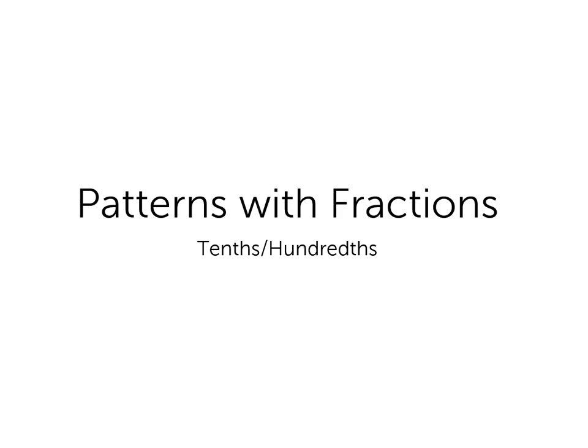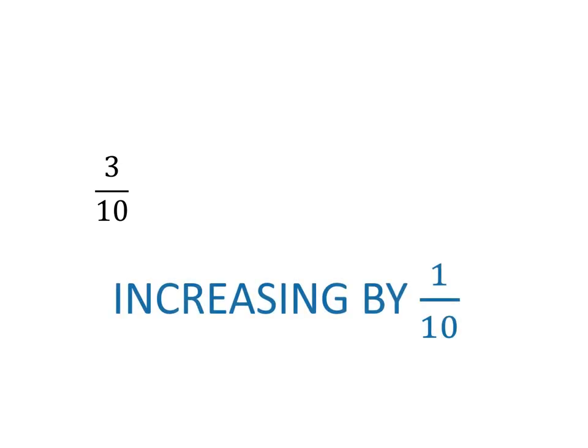Let's look at a simple example of creating a pattern from a description. We'll start with 3 over 10, and we're given that the numbers are increasing by one-tenth. What are the numbers that come after?